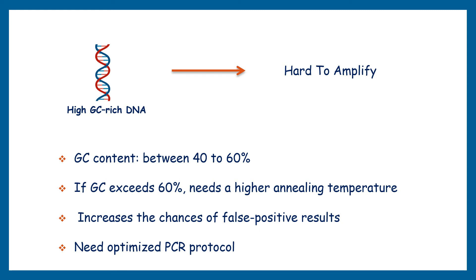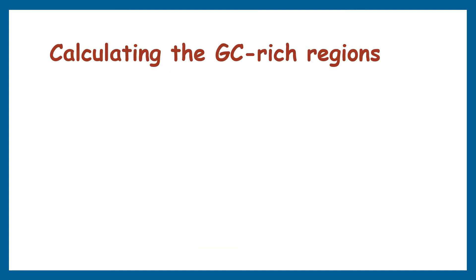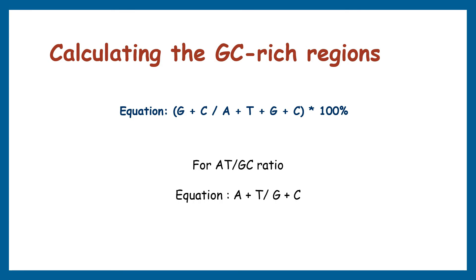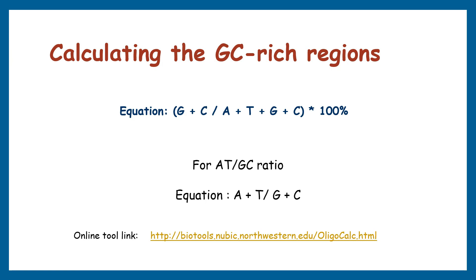A different optimized PCR protocol is needed to amplify GC-rich regions. Care must be taken while selecting the PCR template DNA and designing primers. To calculate GC content and make decisions on how a primer or template sequence behaves during PCR, an equation can be used. You can also calculate the ratio of AT to GC using a separate equation. Some online tools can help in doing this calculation easily.